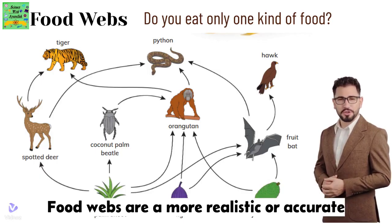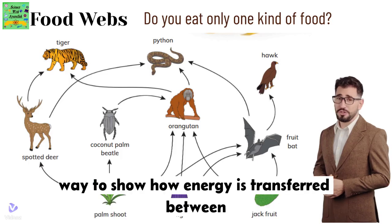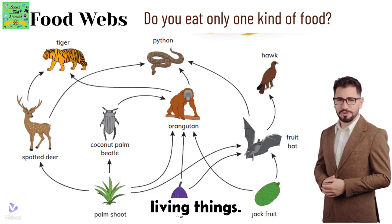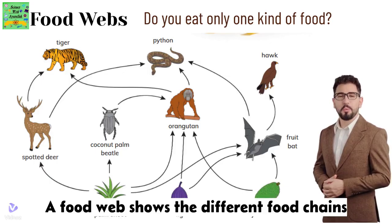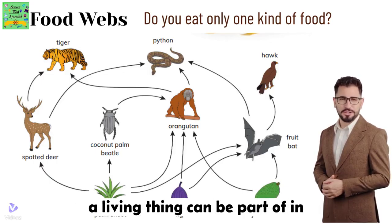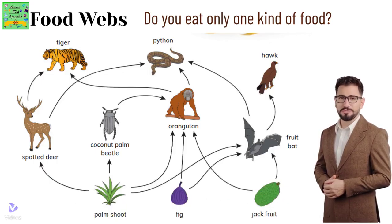Food webs are a more realistic or accurate way to show how energy is transferred between living things. A food web shows the different food chains a living thing can be part of in its habitat.